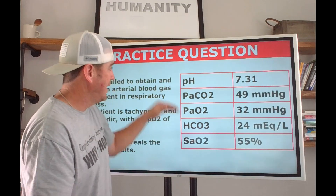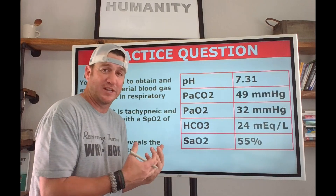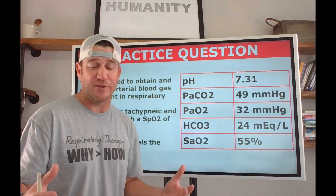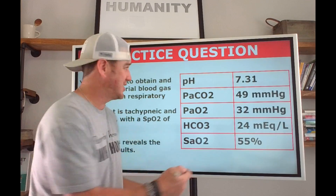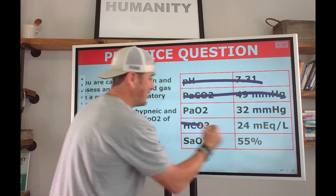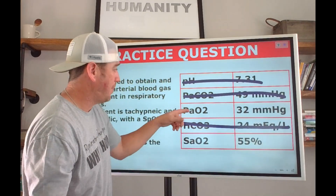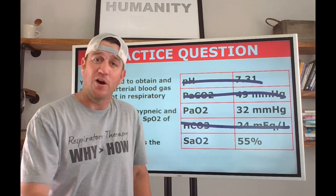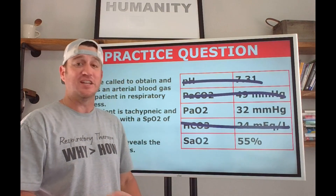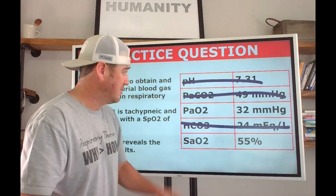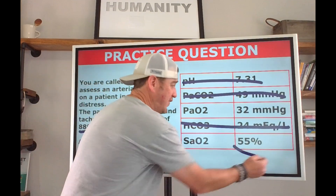ABG analysis reveals the following results: pH 7.31, CO2 49. We already discussed that we can't use pH or CO2 to determine validity, and bicarb doesn't help us either. What does help us is the PaO2: 32 mmHg. That's very strange — 32 mmHg would suggest severely hypoxemic. But when you look at the saturation reported, you see 55%.